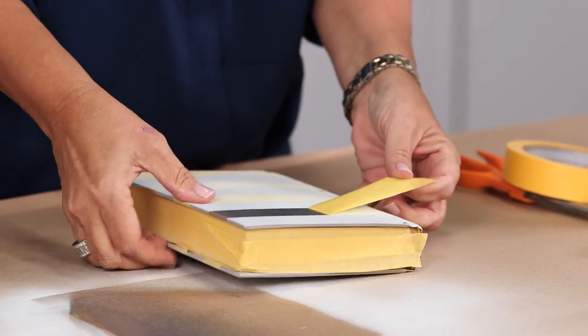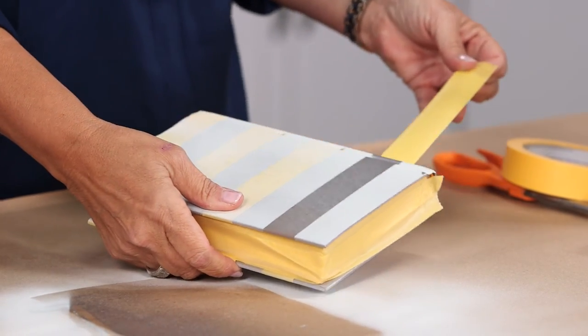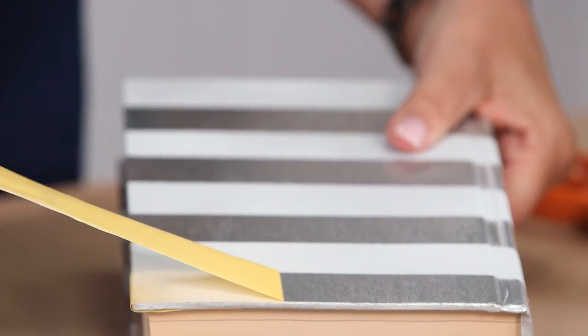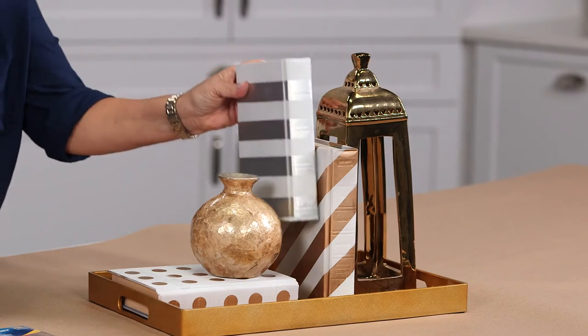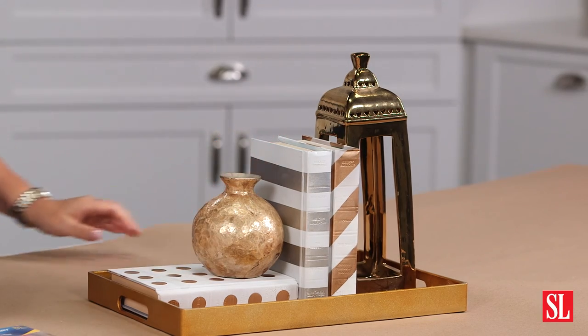Once your book is dry, carefully peel your tape back and you should have a pretty even stripe. There you have a beautiful book that you can use to decorate your home with.